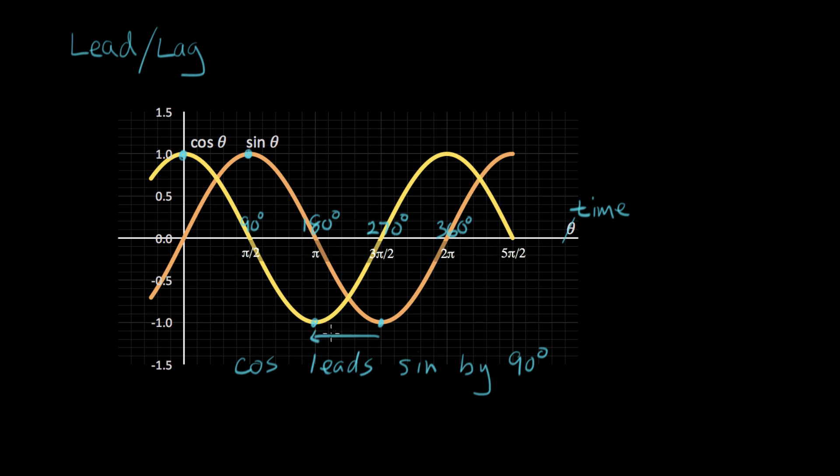Now I can take exactly the opposite point of view. If I actually measure where the sine is relative to cosine, and I say it's behind, then we would say it lags. So the phrase we hear would be sine lags cosine by 90 degrees. So that's the term lead and lag. That's what those mean.